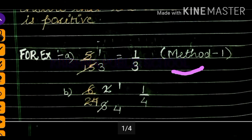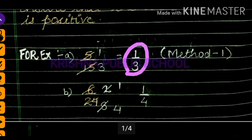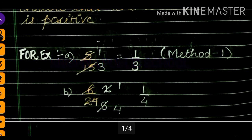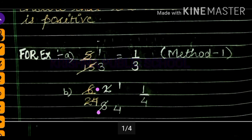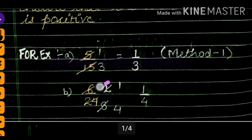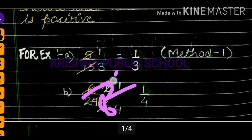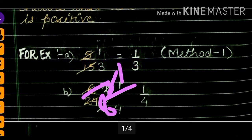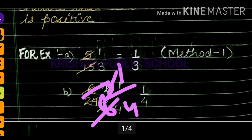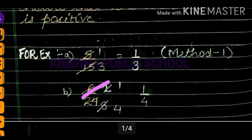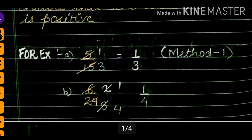I am taking an example: 6 upon 24. We apply the steps to convert 6/24 into standard form by dividing numerator and denominator by their common factor.